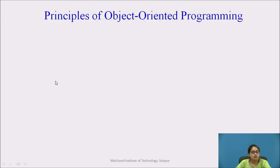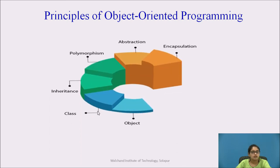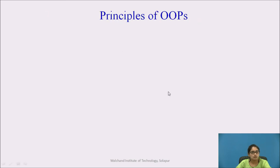Let us start with the principles of object-oriented programming. The principles of object-oriented programming are: object, class, inheritance, polymorphism, abstraction, and encapsulation. Let us see these principles one by one.